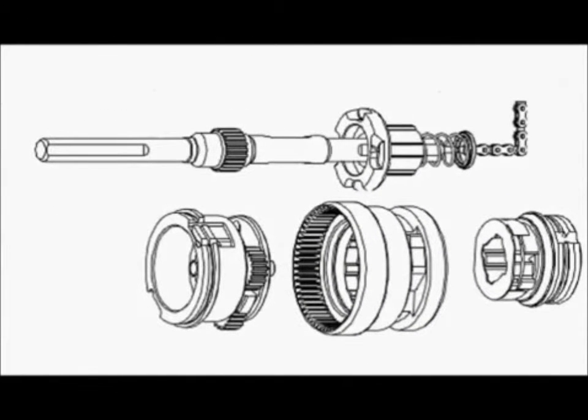Now let's see if we can demonstrate what's going on inside the hub. I've used the schematic of a three-speed to simplify this demonstration, but a five-speed works on the same principle.